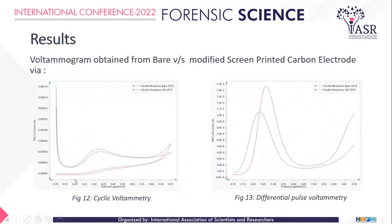In the results, I first compared the peaks obtained for unmodified electrodes versus the modified electrodes in both modes. Particularly, I am showing results for 1.56 micromolar morphine concentration. When I used the modified electrode, it was showing enhancement in the peak.